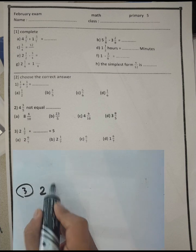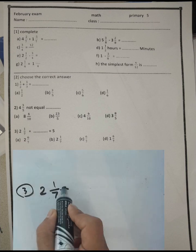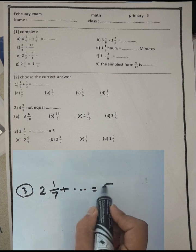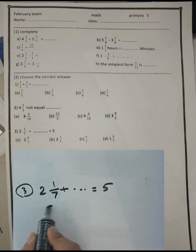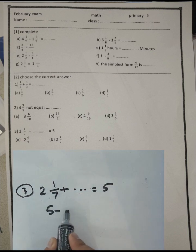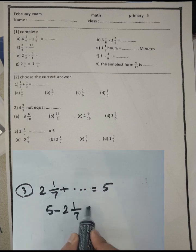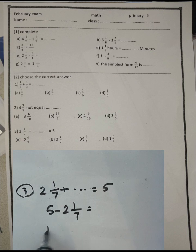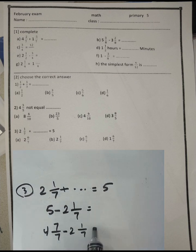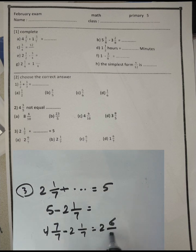Question number three: two and one over seven plus what equals five? We find the difference: five minus two and one over seven. Write five as four and seven over seven, then subtract two and one over seven. Four minus two equals two, and seven minus one equals six. Write seven in the denominator. The result will be two and six over seven.